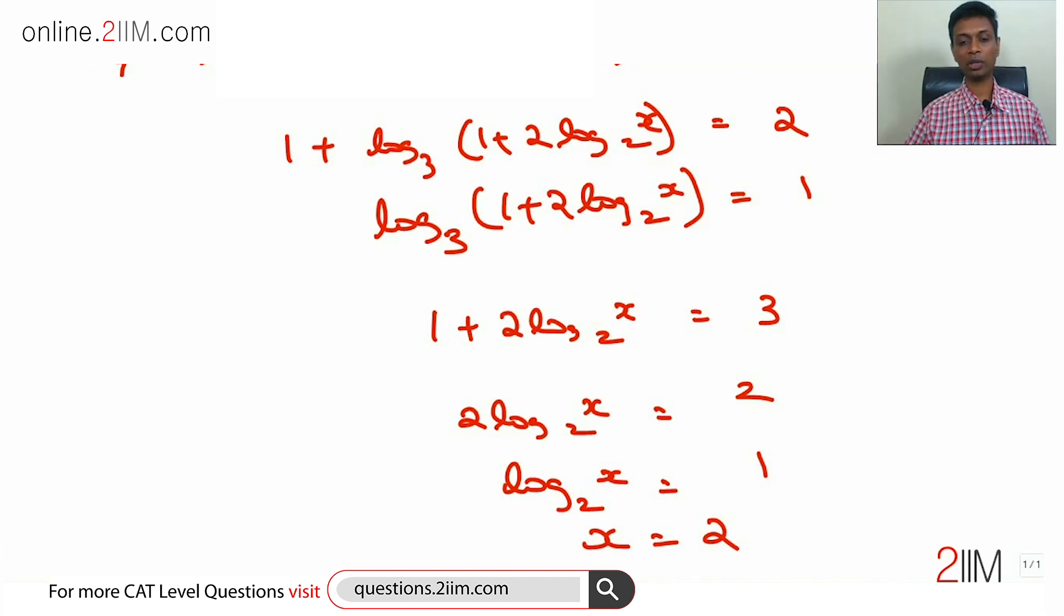Don't simplify from x outwards. Don't call this as log of x squared to the base 2, log of 2x squared, all of that. That becomes very difficult. Solve from the outermost bracket, keep simplifying, and then we're through.